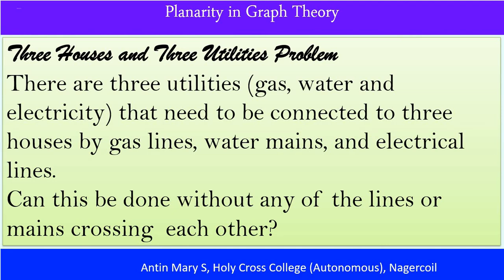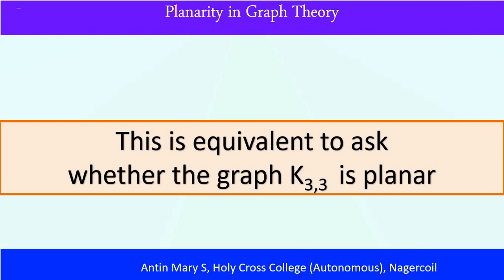There is a question: can this be done without any of the lines or mains crossing each other? Each house should have all three facilities. This is equivalent to asking whether the graph K3,3 is planar.